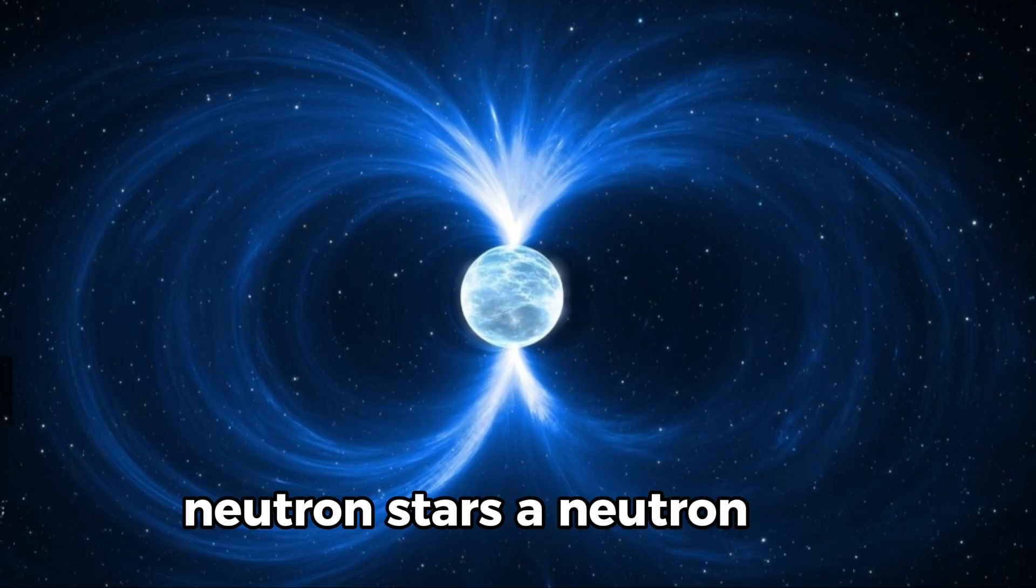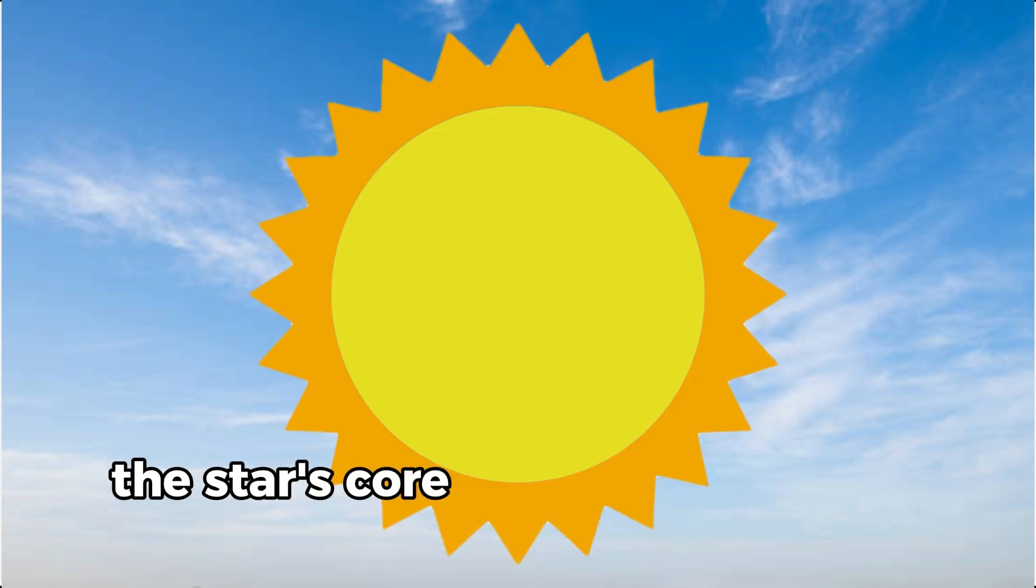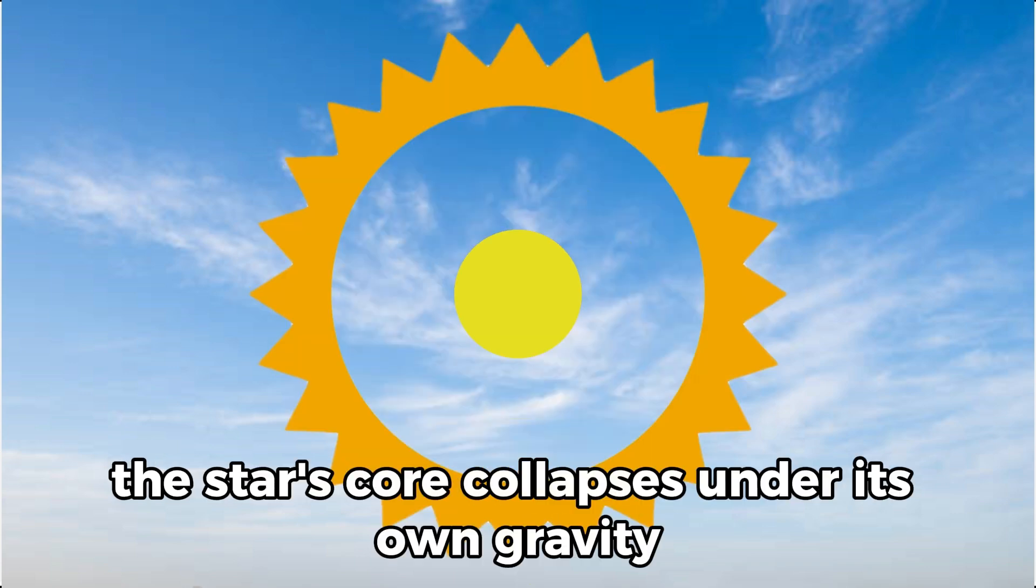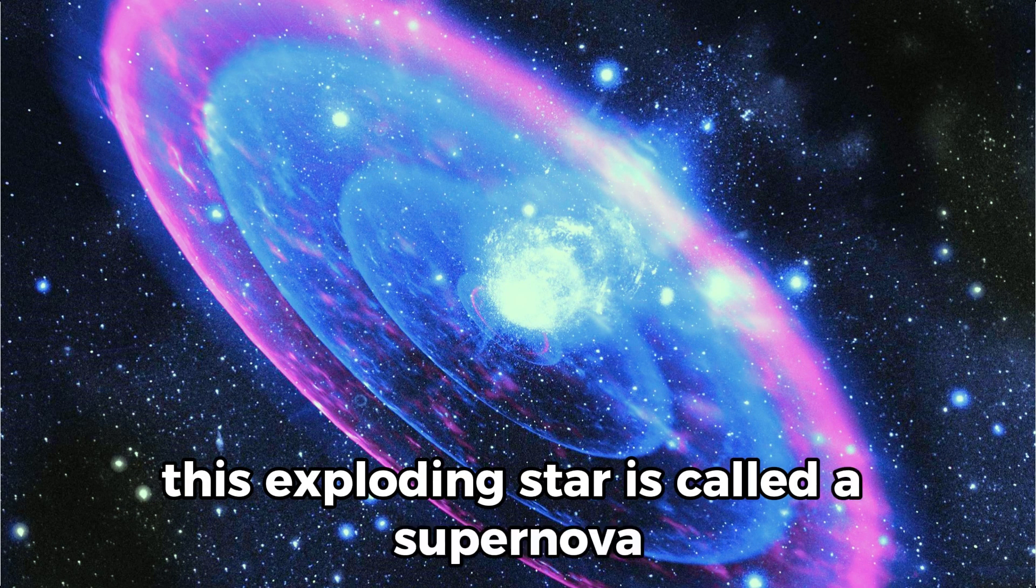A neutron star forms when a massive star runs out of fuel. The star's core collapses under its own gravity, and the outer layers are blasted into space. This exploding star is called a supernova.